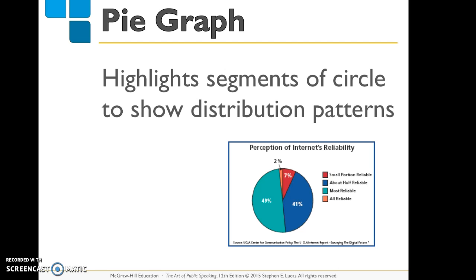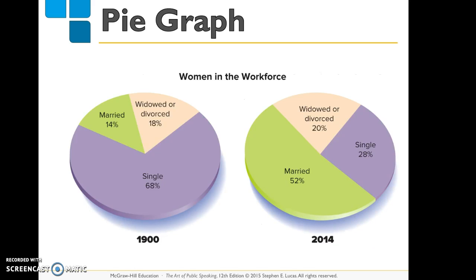Next are pie graphs. Pie graphs are well suited for demonstrating distributional patterns — they highlight segments of a circle to show those patterns. Look at this example: something's wrong with it. If you add up the numbers they do not add up to a hundred. You always want to make sure your pie graph adds up to a hundred, because if not you will lose your credibility. These two pie graphs are much better — they compare women in the workforce in 1900 versus 2014.